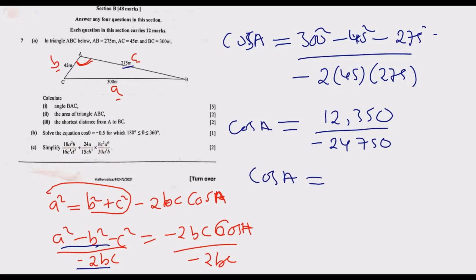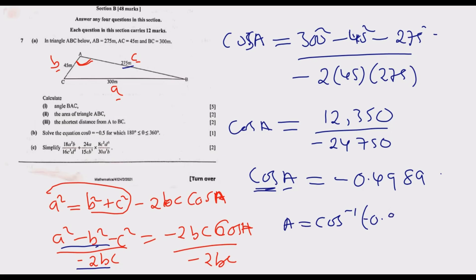Simplifying, we get cos A equals approximately negative 0.4989. To find angle A, we apply the inverse cosine to both sides: A equals cos inverse of negative 0.4989. When we compute this on the calculator, we get 119.93 degrees. We are required to give our answer to one decimal place, so angle BAC equals 119.9 degrees. This is how you find the first part of the question to get 5 marks out of 12.